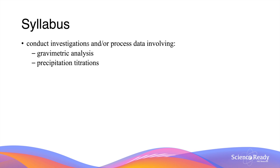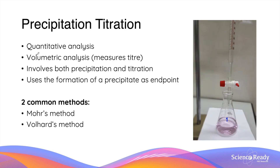Hey everybody. In this video we will be discussing precipitation titrations. Precipitation titration is a quantitative technique that analyzes the concentration of a particular substance by measuring volume. This is why it is often referred to as a volumetric analysis.